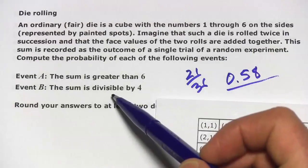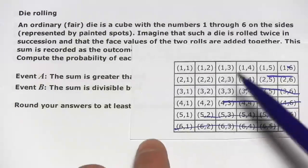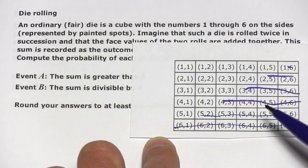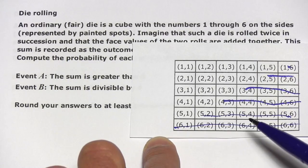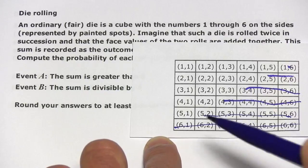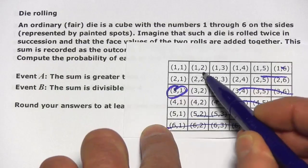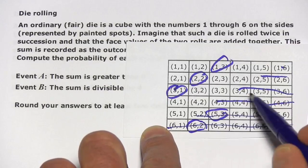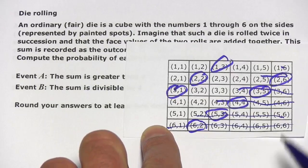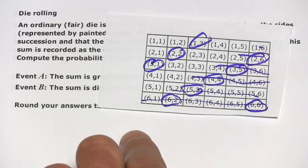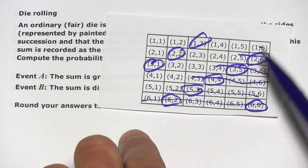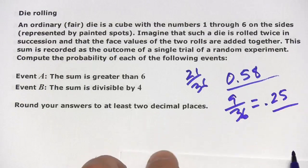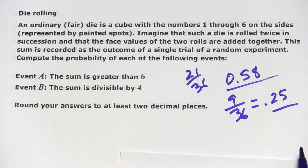Likewise, if we're trying to find where the sum is divisible by 4, the numbers you can get are between 2 and 12. The only numbers in that range divisible by 4 are 4, 8, and 12. You can get a 4 by rolling a 3 and a 1 or a 2 and a 2. An 8 would be a 6 and a 2, a 5 and a 3, or a 4 and a 4. And a 12 — there's only one way to get that. Counting these up gives 9 out of 36, which is 0.25.